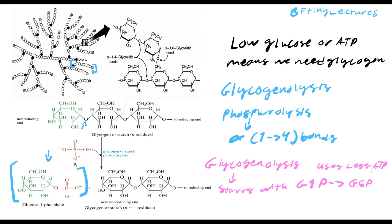We didn't need hexokinase for this, so we technically use less ATP. Does it make sense to use less ATP when you need energy? Yes — glycogen is your first reserve for quick energy storage. Sugars are needed for exercise, so glycogen is the first place your body goes for energy. If you need energy, you wouldn't use something that requires a lot of energy to access.